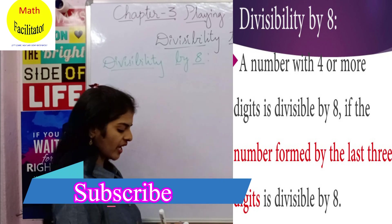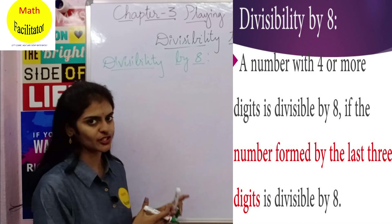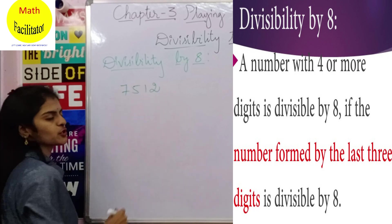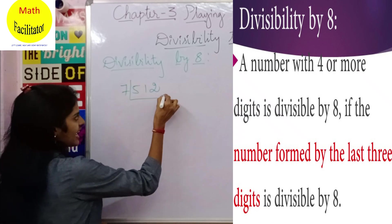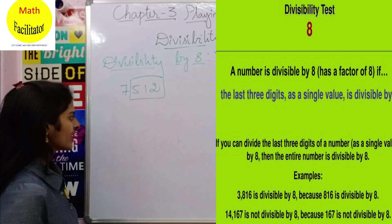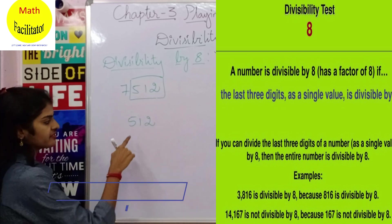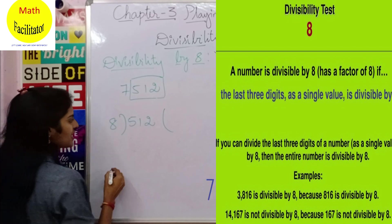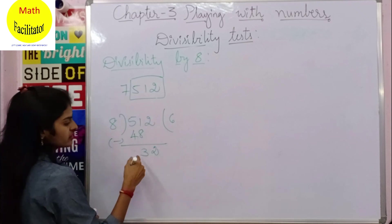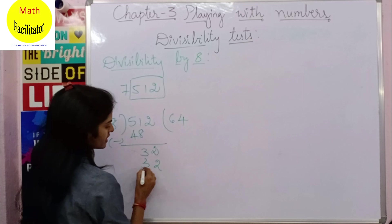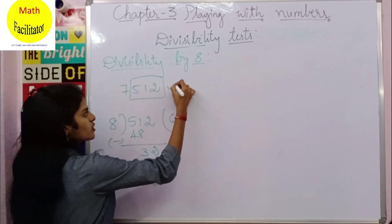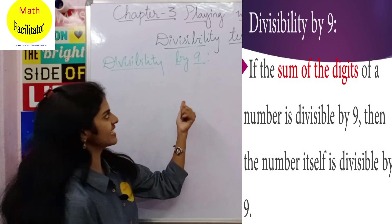For divisibility by 8, if a number has 4 or more digits, you check the last three digits. Take 7512 — check the last three digits: 512. Does 8 divide 512? 8 times 6 is 48, subtract to get 3, bring down 2 to get 32, and 8 times 4 is 32. So 512 is divisible by 8, which means 7512 is also divisible by 8.